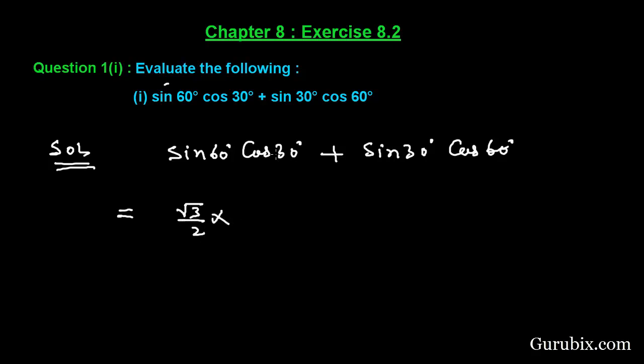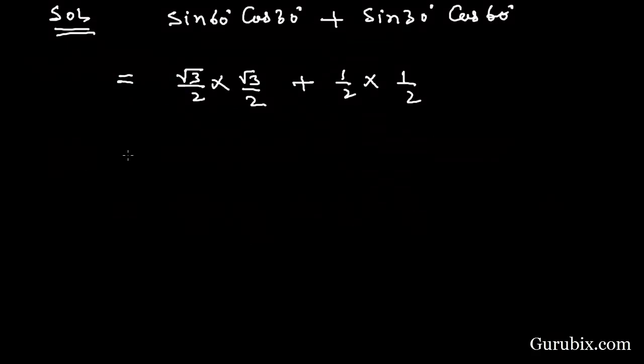The value of cos 30 is also square root of 3 over 2, plus sine 30 is 1 over 2 times cos 60 is 1 over 2. Here we have further calculated it. This equals 3 over 4 plus 1 over 4.